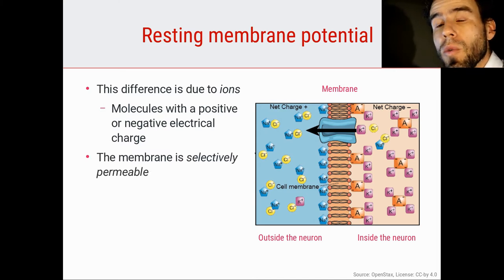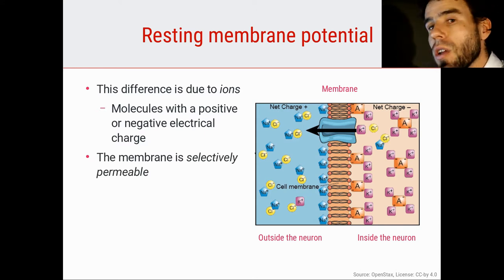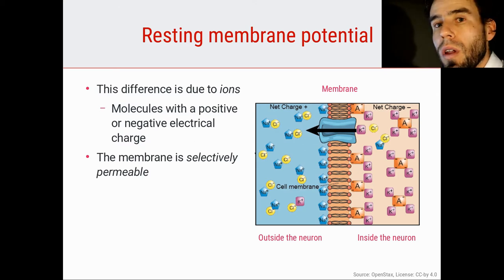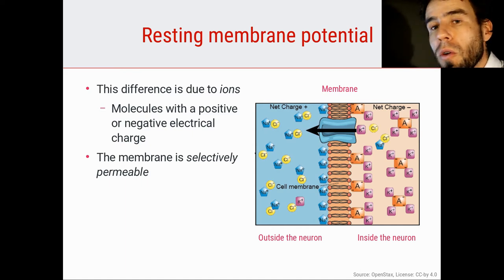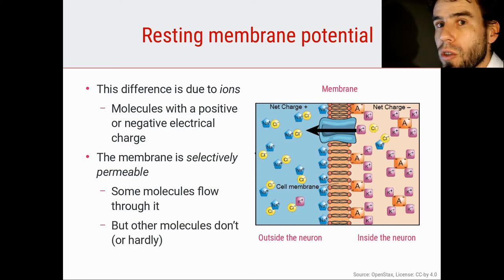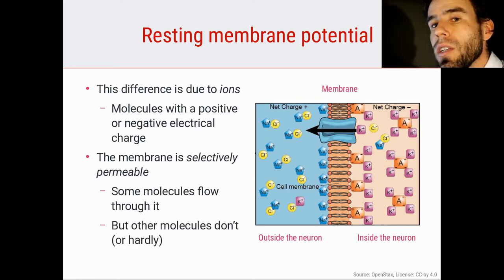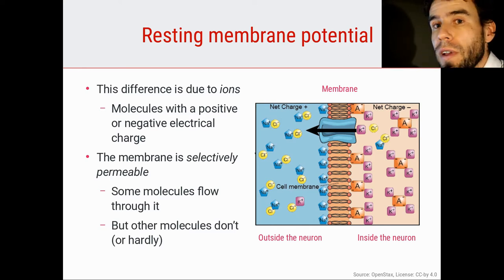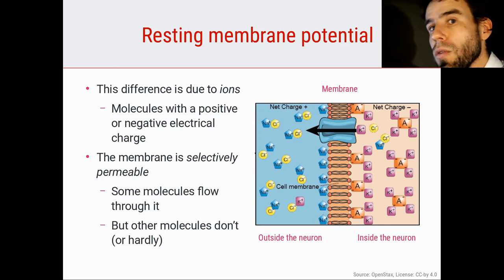A membrane — or at least this membrane — is selectively permeable, meaning that it lets some stuff flow through but not everything. A lot of these positively or negatively charged ions do not flow easily, or at all, through the membrane. So this membrane acts like a blockade that preserves the membrane potential by preventing ions from freely flowing into or out of the cell.